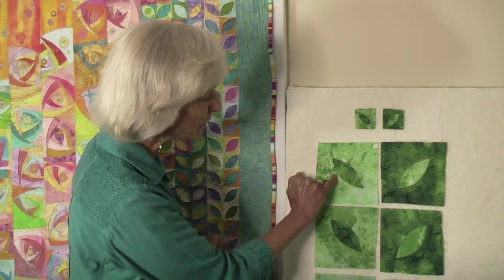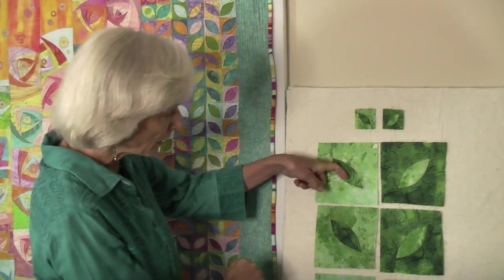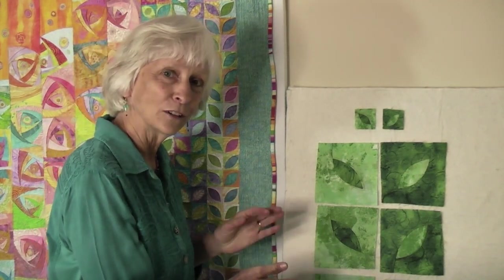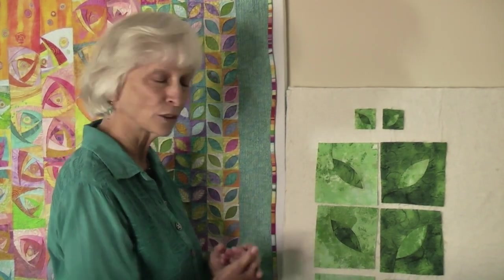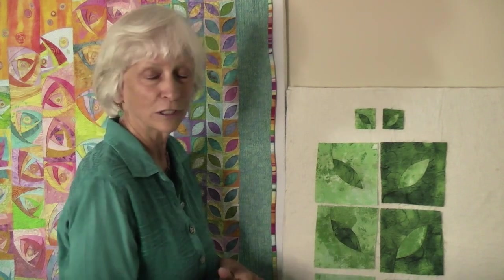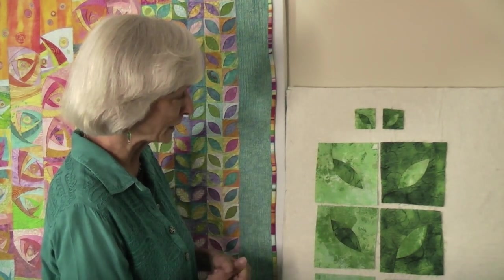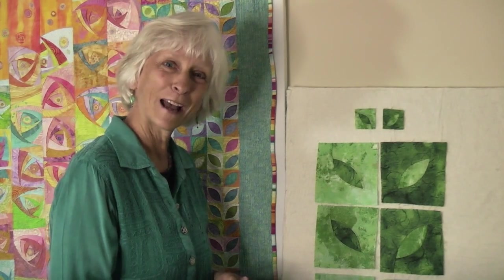You'll notice here that the top stitching is done about an eighth of an inch from the edge. I like that look. It gives it a little extra texture. You can stitch closer if you like, and here's an example of the smaller leaves. So let me show you how this is done.